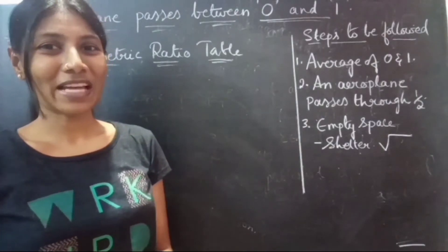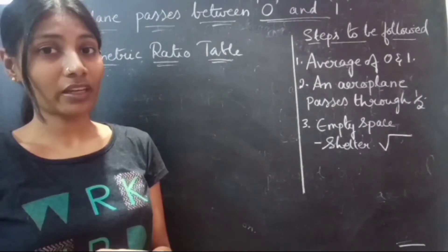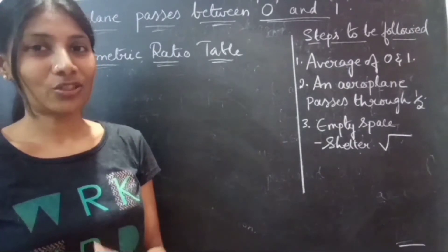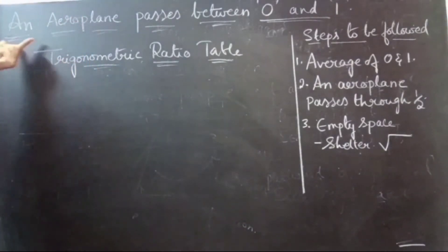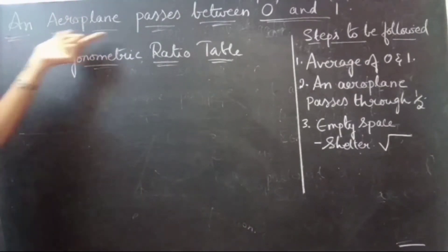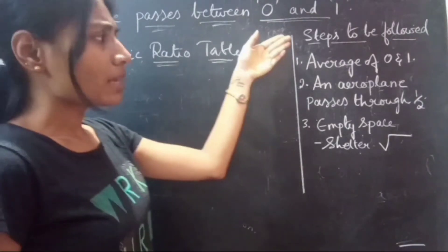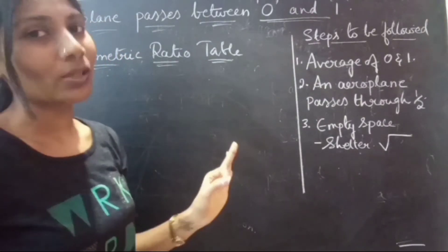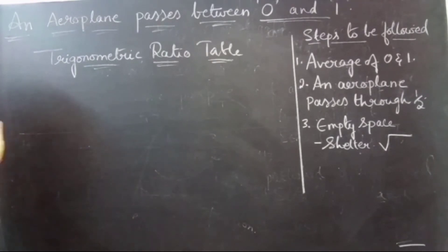Hello everyone, this is Kalpana. In this video we are going to construct a trigonometric ratio table using a very easy trick. We have titled it 'An Aeroplane Passes Between 0 and 1.' We are having three steps to follow, so let's start the trigonometric ratio table.